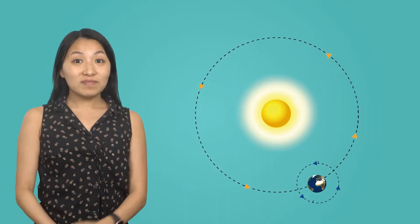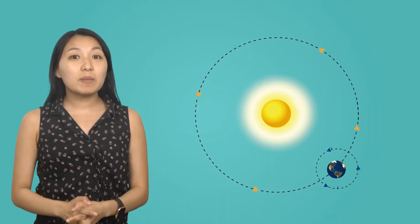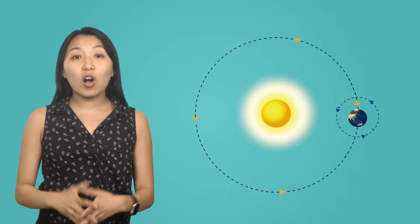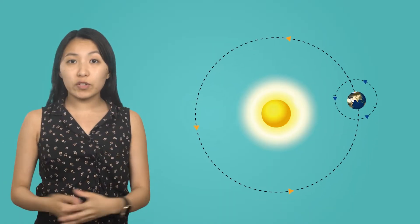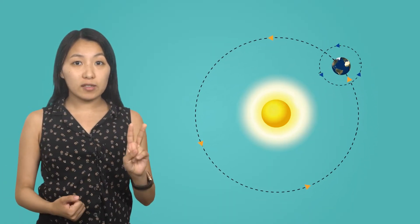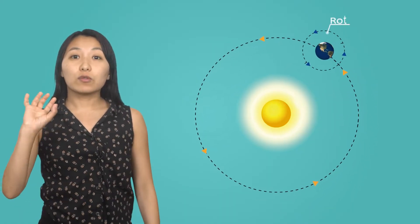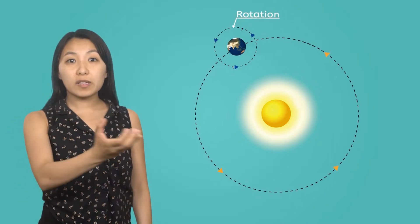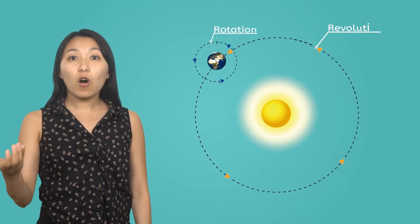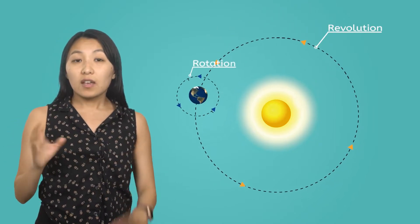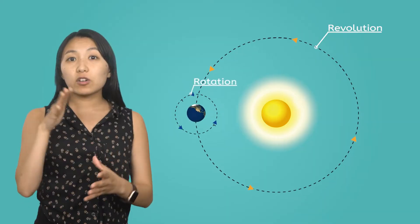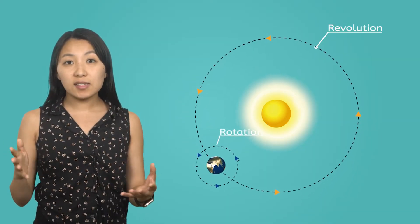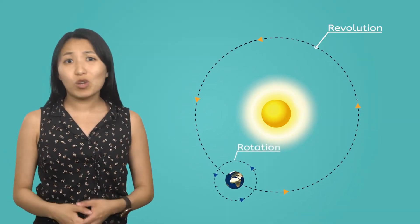Before we dive in, let's understand a bit about Earth's movements. Earth is constantly moving through space in two main ways: it rotates on its axis and orbits or revolves around the Sun. These movements are key to understanding day and night, seasons, and so much more.